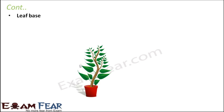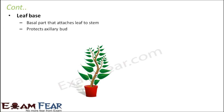Let us now talk about the third part of a leaf, that is the leaf base. It is the basal part that attaches the leaf to the stem. First you have the lamina — the green expanded portion — then you have the stalk, that is the petiole, and then you have the leaf base, which is the point where the petiole gets connected to the stem. The function of the leaf base is that it protects the axillary bud, which will be present at the axil of the leaf or somewhere near the leaf base.